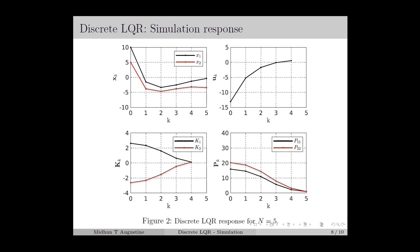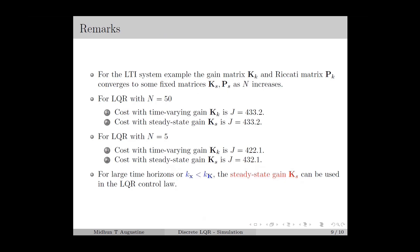Figure 2 shows the response of the LQR for a time horizon N equal to 5. Here, the time horizon is small, so the feedback gain and Riccati matrices are not converging to some fixed matrices within the time horizon. We can say that in this case, the feedback gain and Riccati matrices are time varying over the entire time horizon. The states and control input are converging to 0, but they are not reaching their steady state value within the time horizon. From the simulation response, we can see that if the time horizon is sufficiently large, the feedback gain and Riccati matrices will converge to some fixed matrices, let's say K_S and P_S.